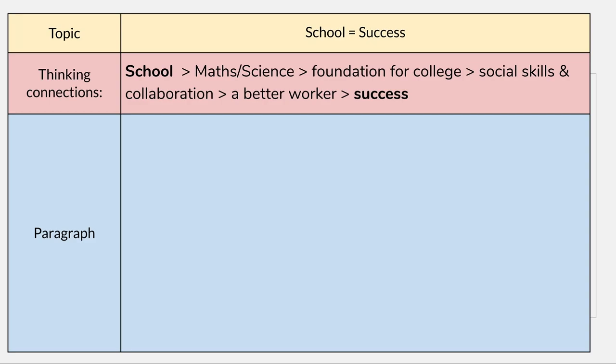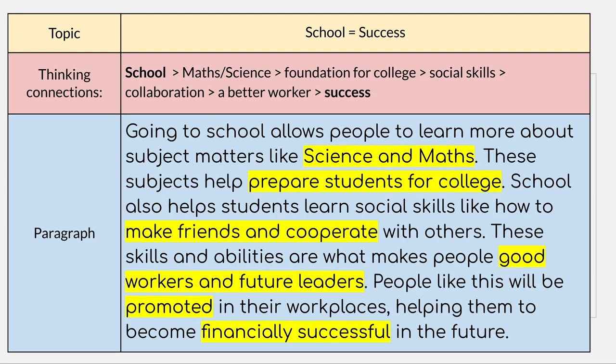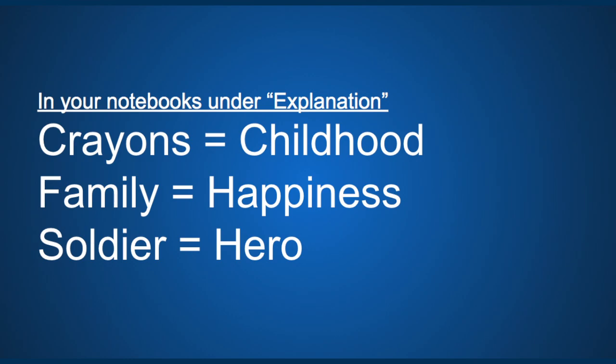So this is the paragraph we develop connecting those two things: 'Going to school allows people to learn more about subjects like math and science. These subjects help prepare students for college. School also helps students learn social skills like how to make friends and cooperate with others. These skills and abilities are what make good workers and future leaders. People like this will be promoted in their workplaces, helping them to become financially successful in the future.' Now it's your turn — pick one of these pairs of ideas and link them together using this same process before you move to the next exercise.